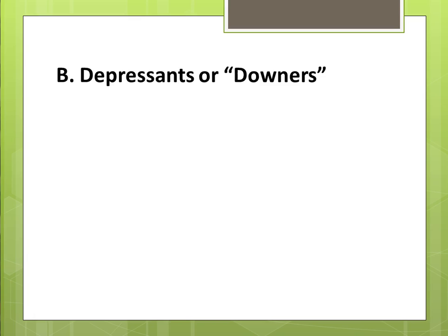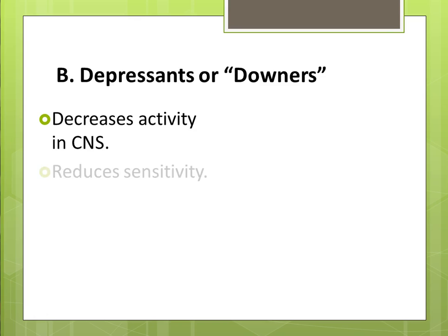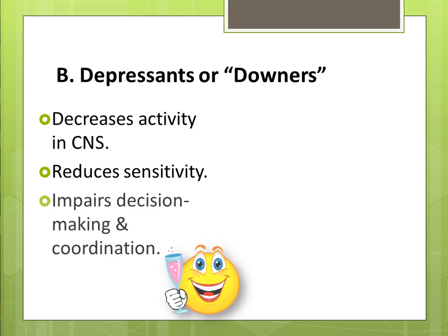Our second category is depressants, or downers. The root word of depressant is depress, which means to decrease or inhibit. In this case, a depressant decreases the activity in your central nervous system, or your brain and spinal cord. In other words, depressants tend to slow you down and reduce sensitivity to pain or other sensations. As such, depressants can impair decision making and coordination because your brain and spinal cord are processing much slower.